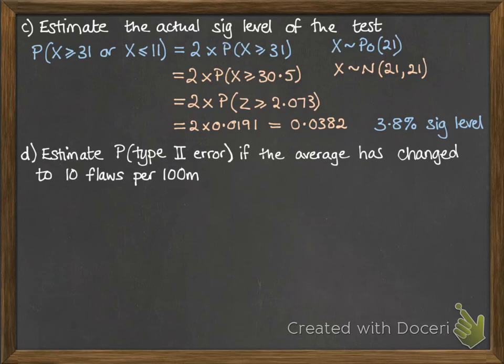Next part, we want to estimate the probability of a type 2 error if the average has actually changed to 10 flaws per 100 meters. So type 2 error means that we have accepted the null hypothesis when it wasn't true, when an alternative was true. So accepted H0, given that lambda is actually equal to 30. Remember, we did this all based on 300 meters.